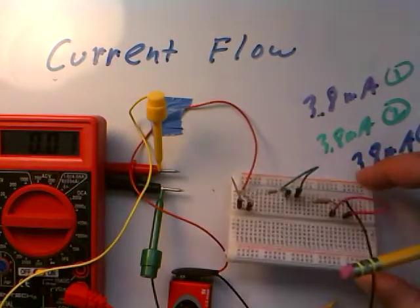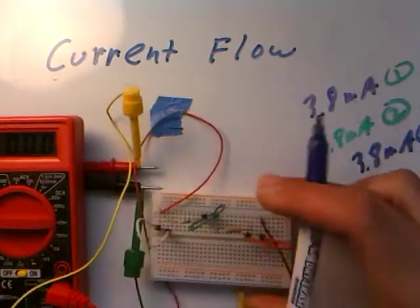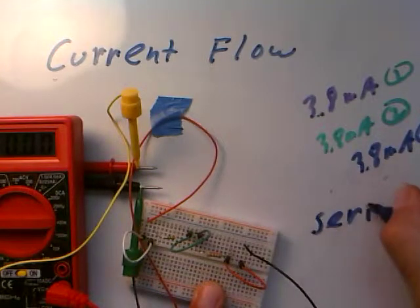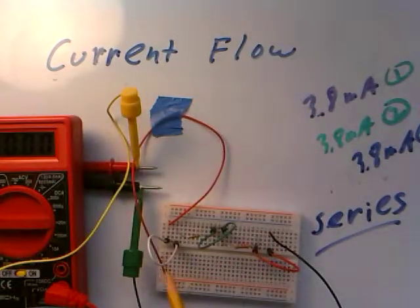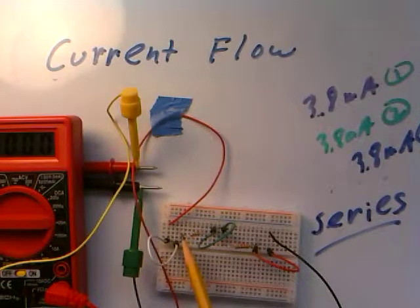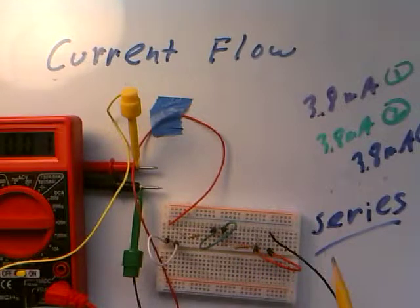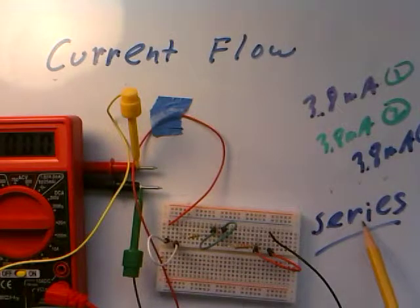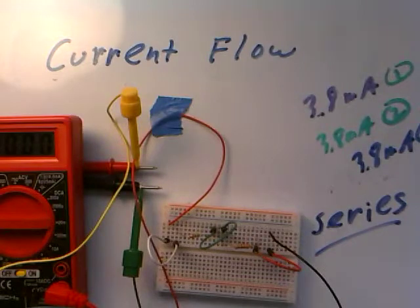Now this particular configuration here is called a series configuration. Series configuration because if you look at the current flow, it doesn't have any options in terms of where it can flow. It flows into one resistor, must flow out of that resistor, into the other resistor, must flow out of that resistor, back around to the battery. So no options at all. And the definition of circuit elements in series is that they all carry the same current, which is exactly what I'm seeing here.